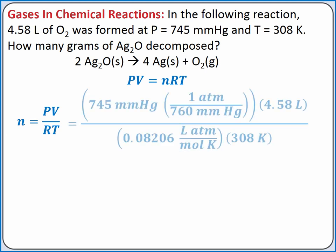When we plug our pressure into the ideal gas law, we need to convert it from millimeters of mercury into atmospheres using one atmosphere is equal to 760 millimeters of mercury. Completing the calculation, we get 0.178 moles of oxygen.